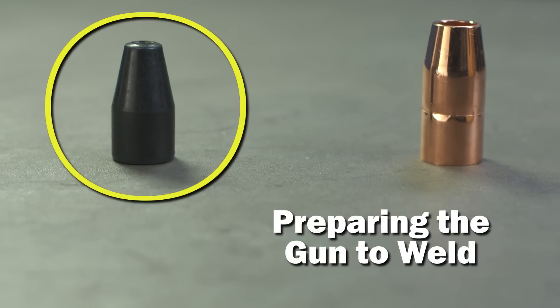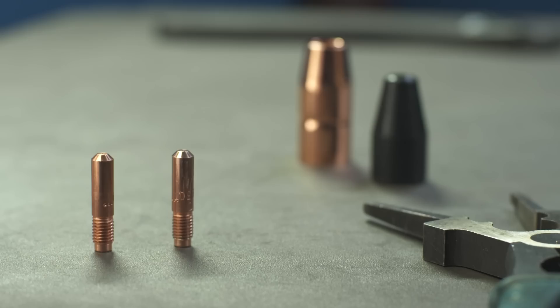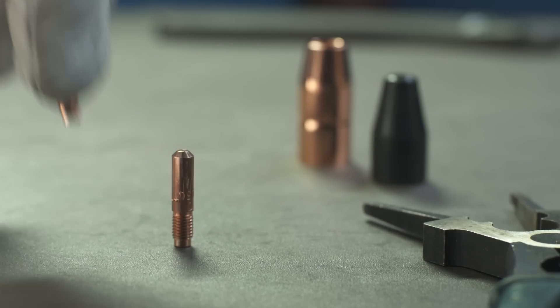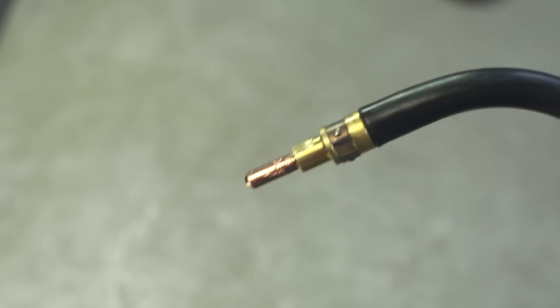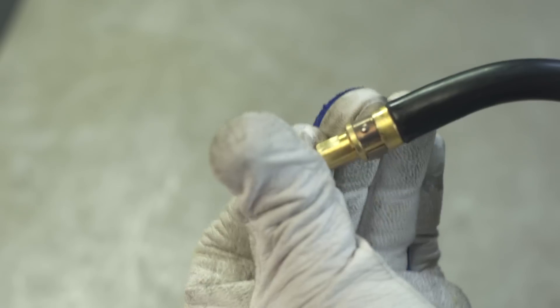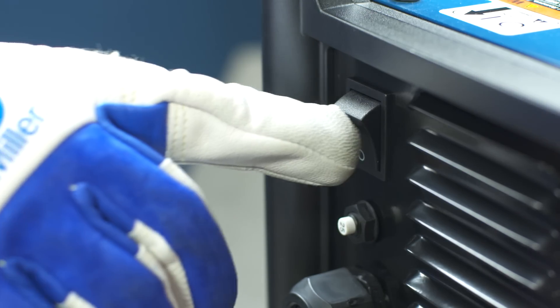Miller suggests using the optional gasless flux cord nozzle for welding flux cord wire. Check to make sure you have the proper contact tip for the wire diameter you've selected. Then, prepare the gun by removing the gun nozzle and contact tip. And turn your machine on.